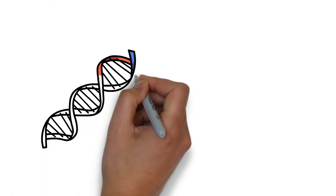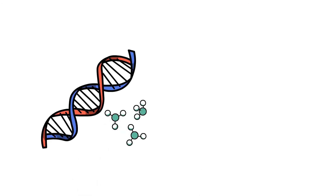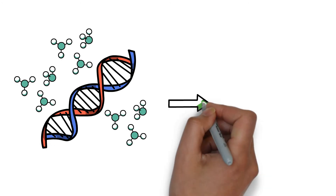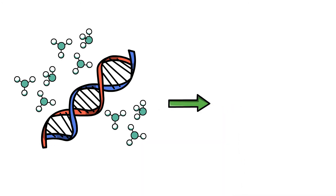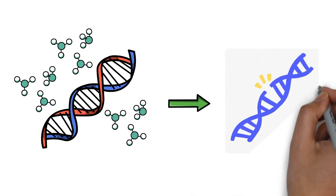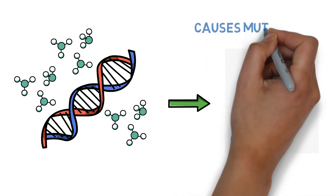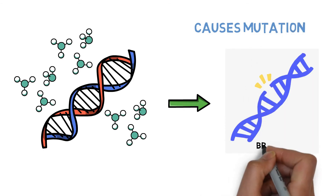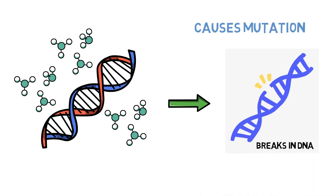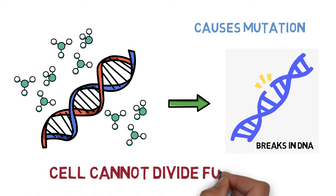Some antibiotics can directly attack the genetic material of bacterial cells. They bind to the bacterial DNA, causing mutations, and sometimes leading to breaks in it. Due to this attack, the cells cannot multiply or replicate their DNA, and the cell dies.